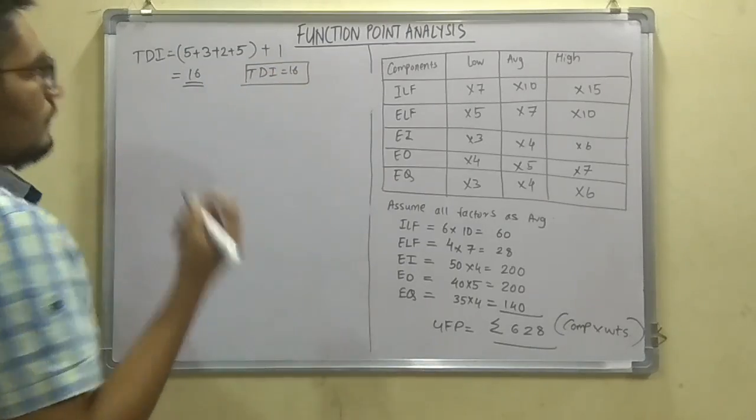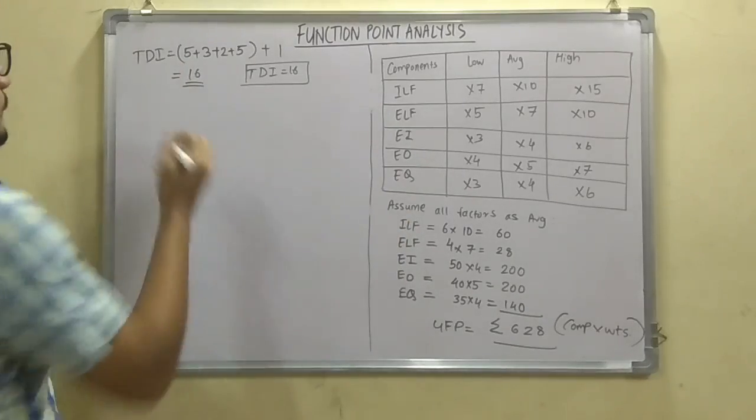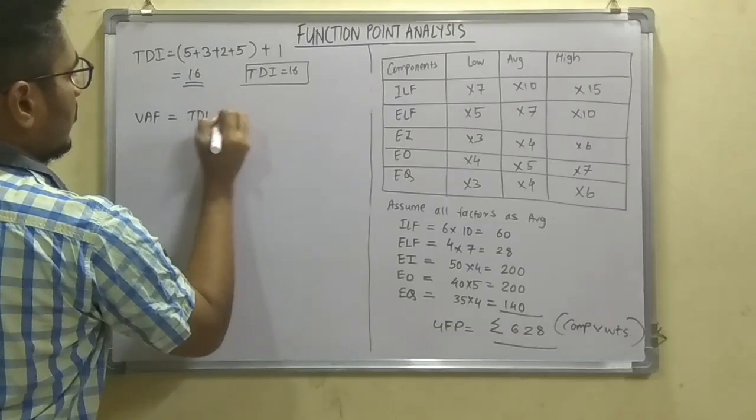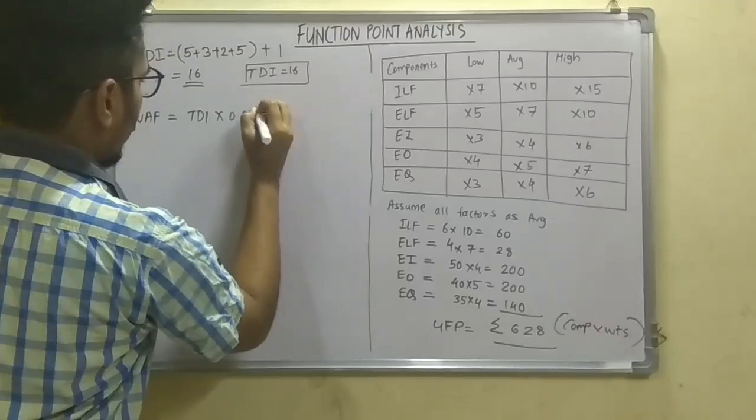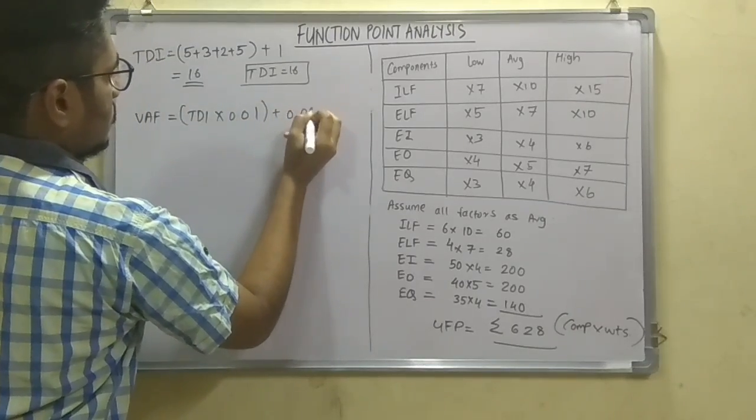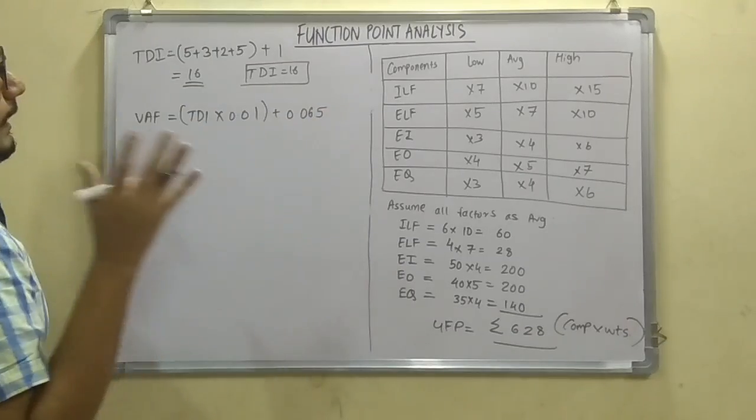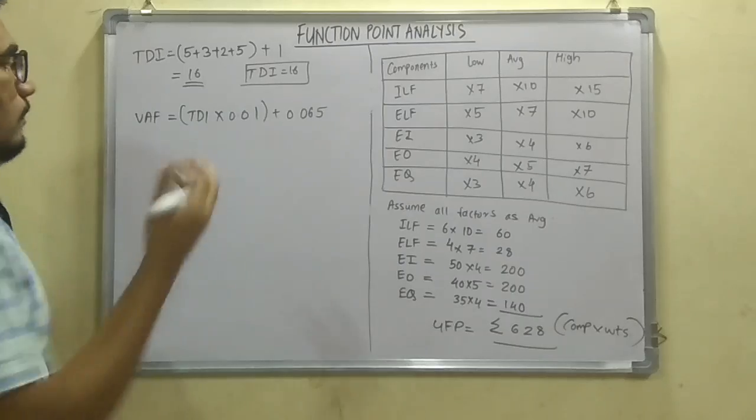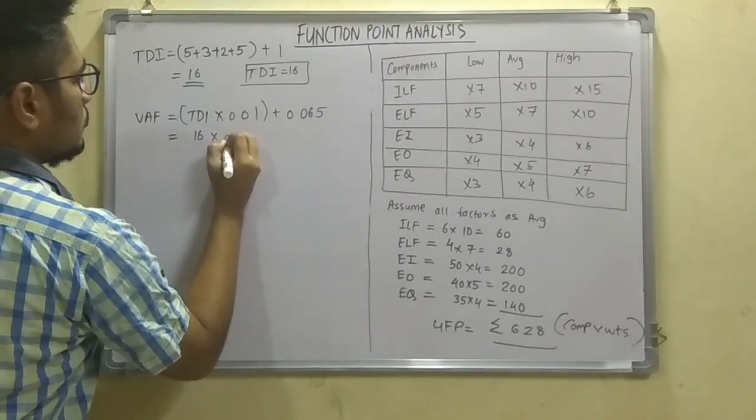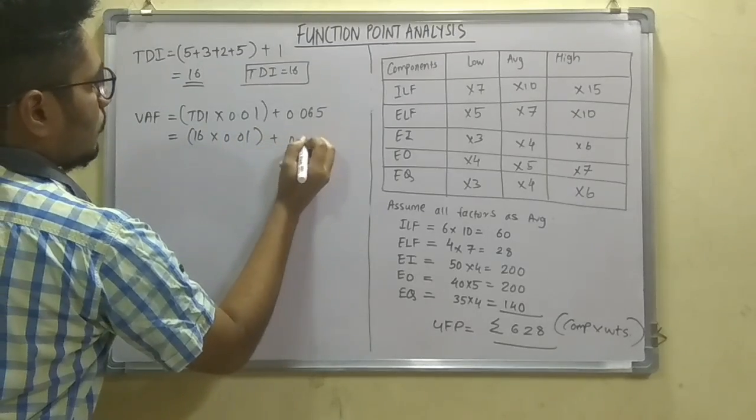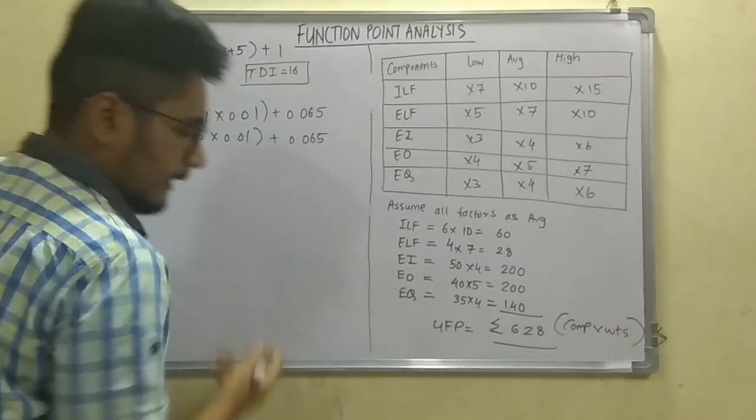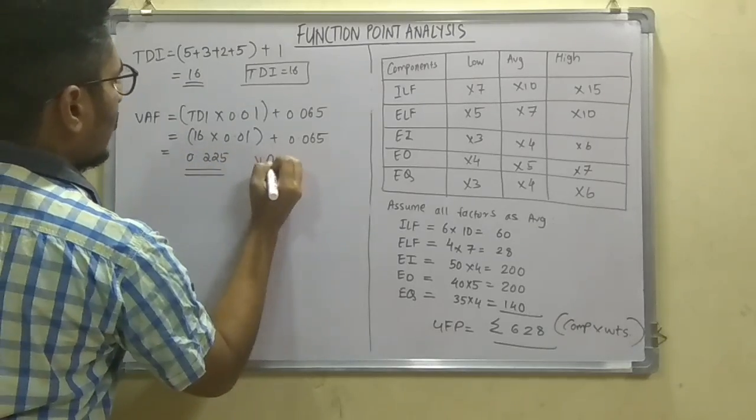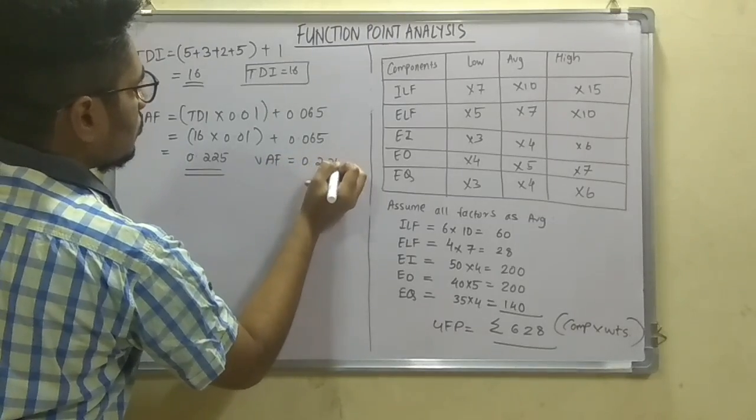Next we will calculate the VAF, that is the value adjustment factor. This is calculated by having this TDI multiplied by 0.01 plus 0.065. In a previous video I told you that you need not change or manipulate any of these values. Just put the value of TDI into this and you will get the answer. That is 16 into 0.01 plus 0.065, and you get the answer as 0.225. So VAF you get as 0.225.